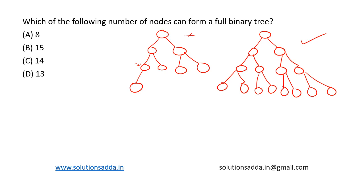So based on the options, option B is the right choice. Similarly, if we check, we can see that 14 and 13 will also not form a full binary tree, so option B is the right choice.